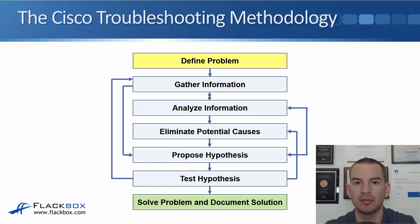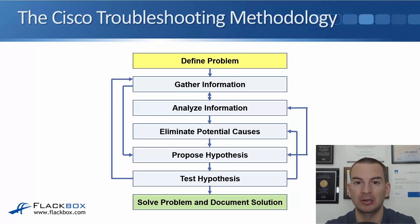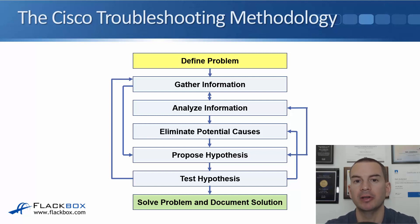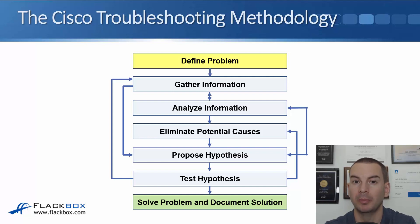The first thing to do is to define a problem — clearly specify exactly what the problem is. Once you've done that you move into gathering information. For example, with a connectivity problem, check if you can ping from the source to the destination. Find out if it's affecting just one host or other hosts in the same area. If it's only affecting one host the problem is probably with that host; if it's affecting everybody on that subnet it's probably something between the host and the destination.